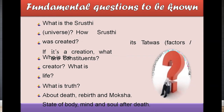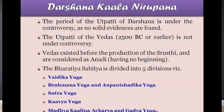Darshana Shastra talks about srishti — how creation happened, how the universe was created, what was created, how it was created, and what are the tattvas or factors involved. These are discussed in each philosophy. Who is the creator? What is life? What is the truth about death, rebirth, and moksha? All these come under each philosophy.